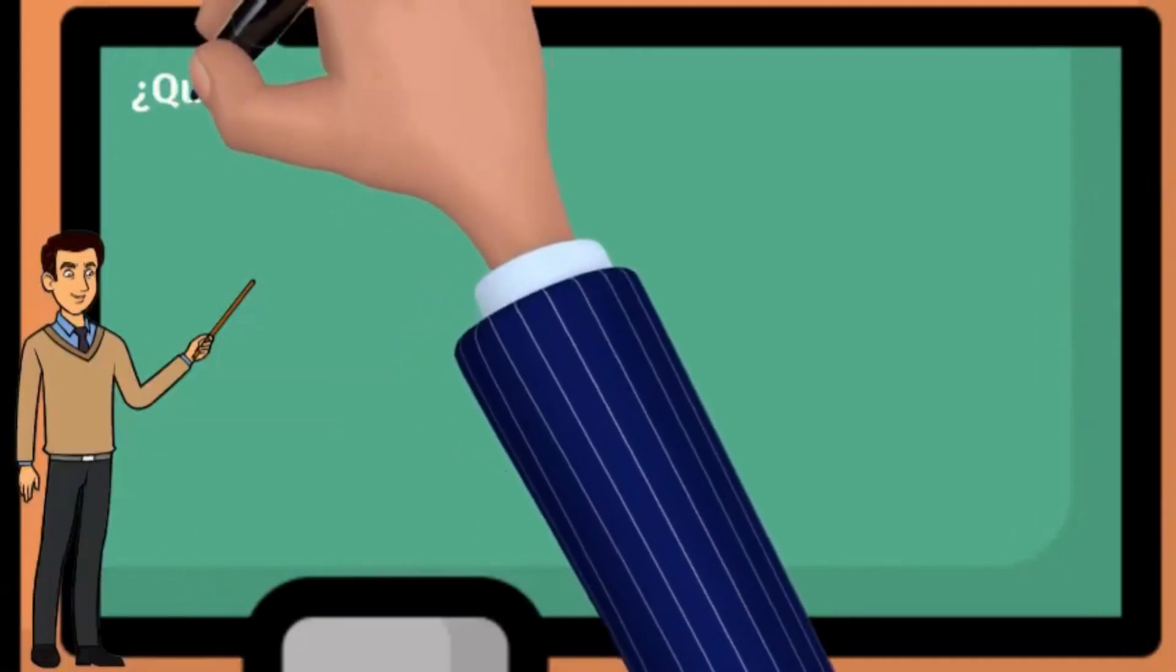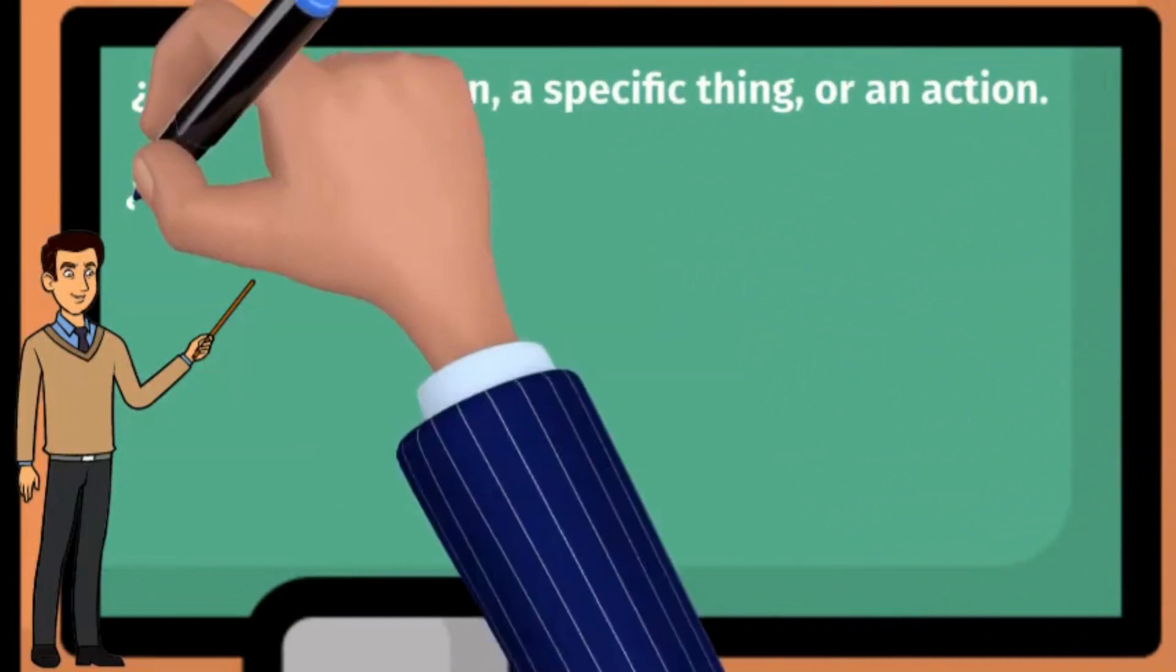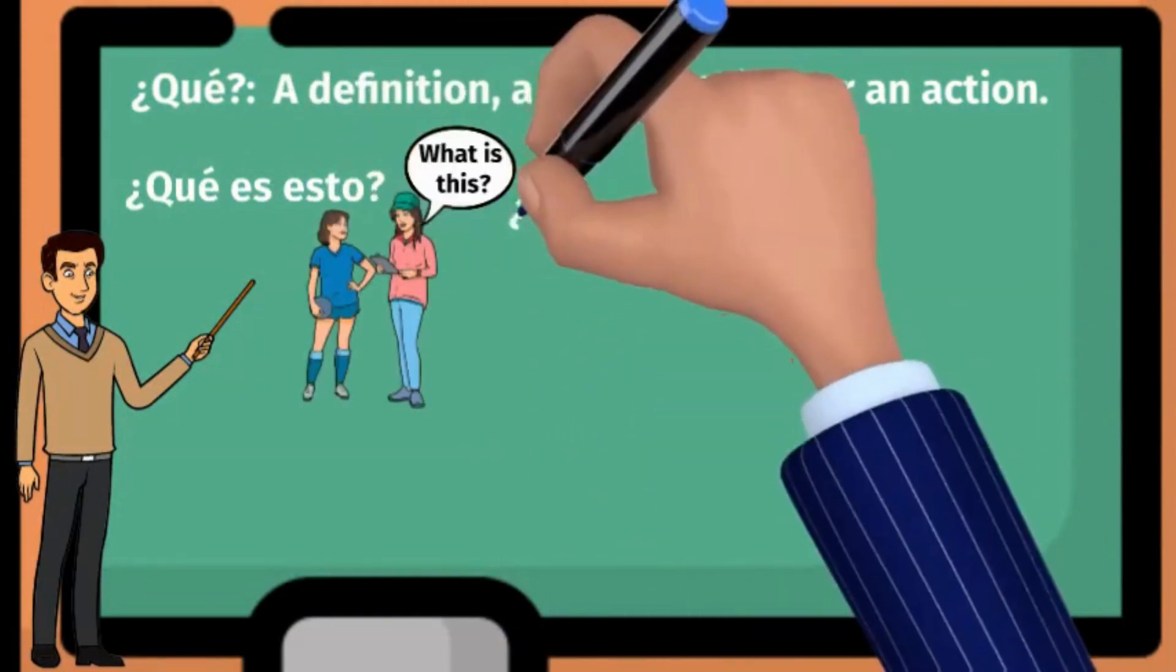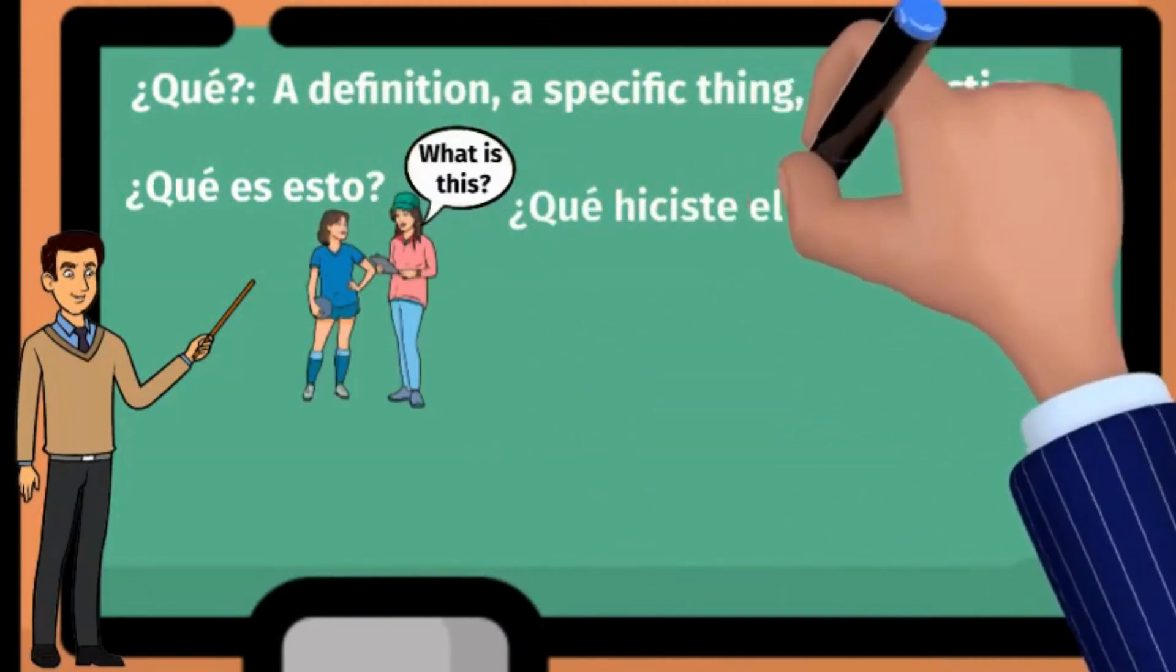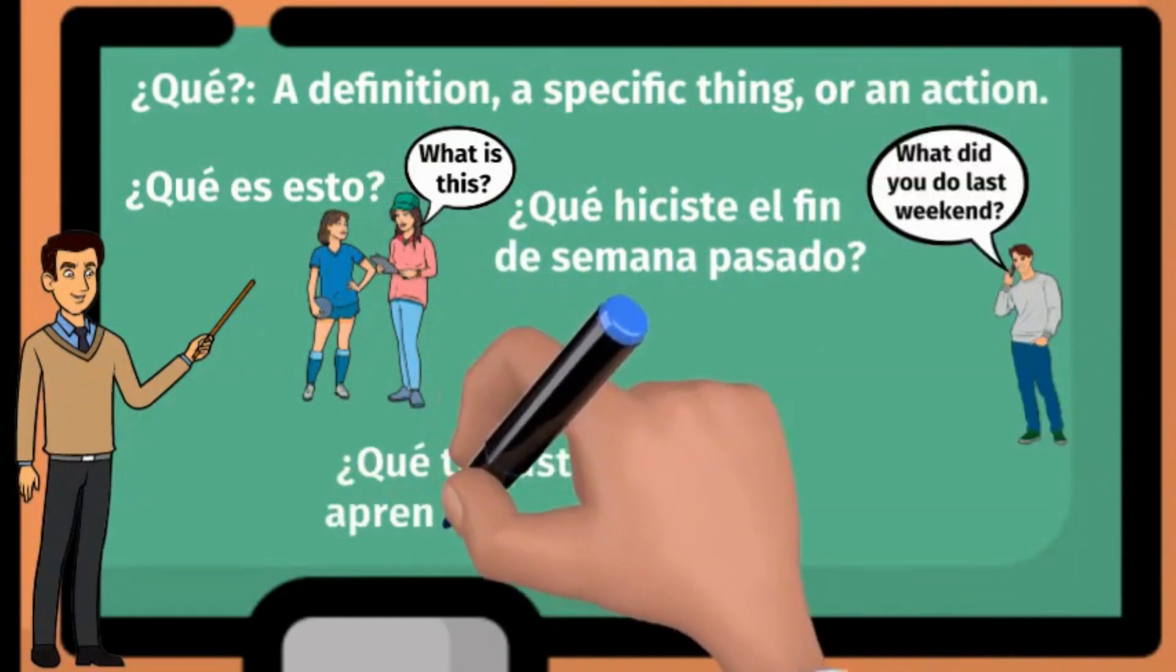Let's start with ¿Qué?. This word helps you ask for a definition, a specific thing, or an action. For example, you can ask questions such as ¿Qué es esto?, ¿Qué hiciste el fin de semana pasado?, or ¿Qué te gustaría aprender a hacer?